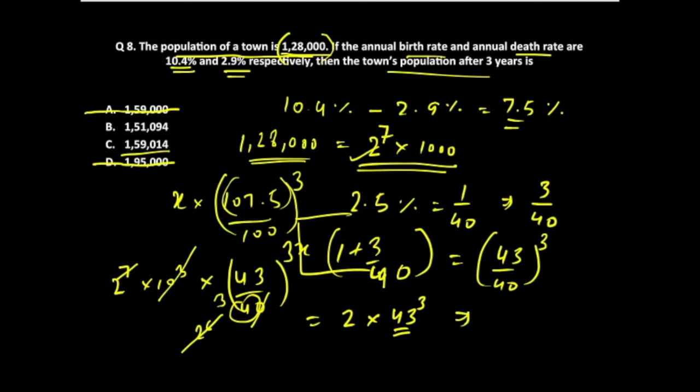You will see that the increase in 128,000 would be more than 20 percent. Why more than 20 percent? Because we know that 7.5 over the period of three years would give us around 22.5, and it would be even more than that because it is acting for consecutive three years.